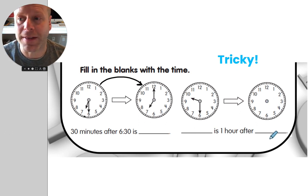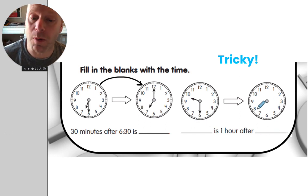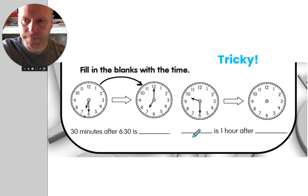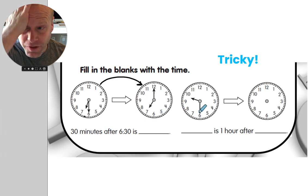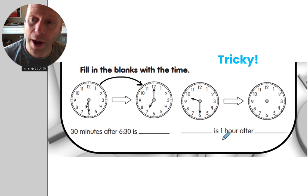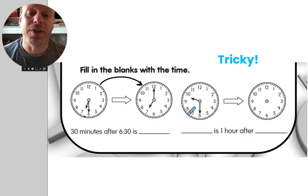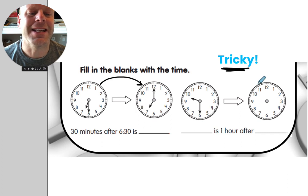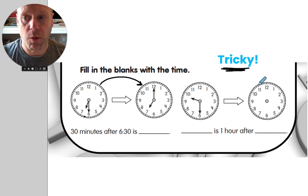But this one is a little bit trickier because it doesn't have the hands, so you can't just write that time. You have to think about what's happening. Hold this time in your head — this time is after this time, one hour after. So this time is the late one, and you need to figure out the early time. That's why that one is quite tricky — don't get fooled on that one.